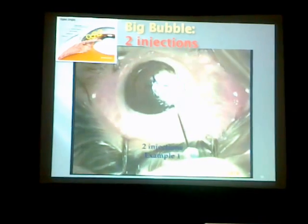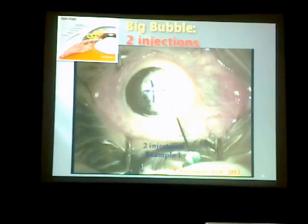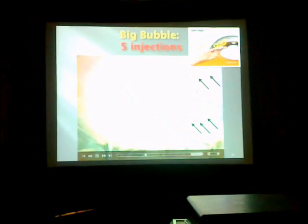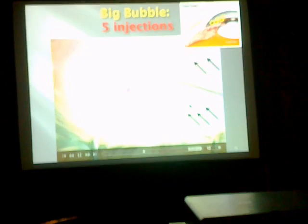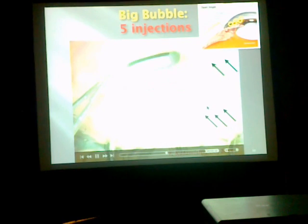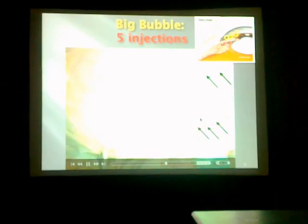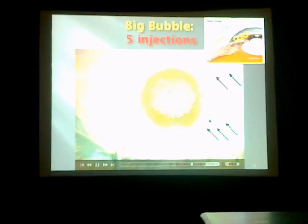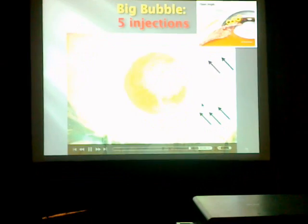We can obtain the big bubble after many injections. After the first injection we may fail, and obtain the bubble after the second injection. You may get the bubble even after five injections — first injection, no bubble; second injection, still no bubble, with some air seen under the conjunctiva; third injection, not yet — don't lose your enthusiasm; fourth injection, not yet; and with the fifth injection, you have the bubble. This becomes clear after delaminating the corneal stroma, and this is the case after finishing.